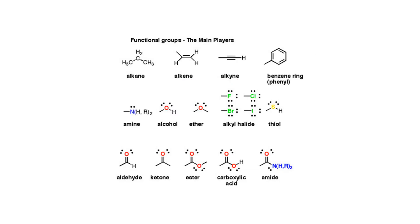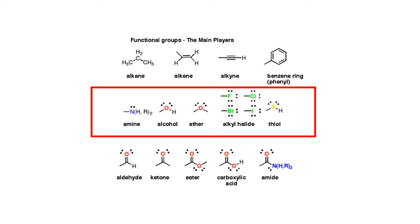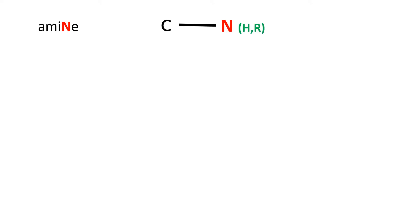Let's move on to the second group. In the second group we have amine, alcohol, ether, alkyl halide, and thiol. Now they all look a little bit scary but once you see my trick it's a lot easier to remember. Amine has the letter N, so I bolded the letter N to help me remember that a carbon attached to a nitrogen is an amine.